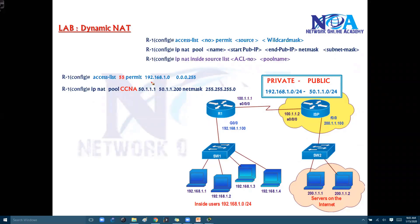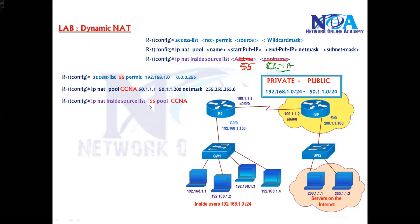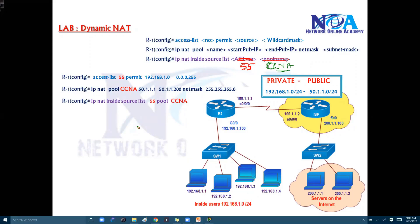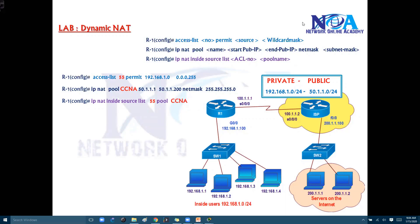To do the mapping, we use: 'ip nat inside source list [acl-number] pool [pool-name].' The ACL number refers to the standard ACL we defined for the private IP range — if using a named ACL, the name can be used as well. The pool name must match what was configured in the 'ip nat pool' command, in this example 'ccna.' This completes the three-line configuration: define private IP range, define public IP pool, and map private to public.